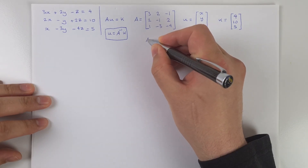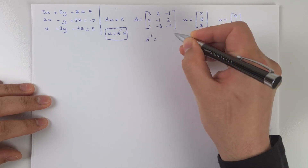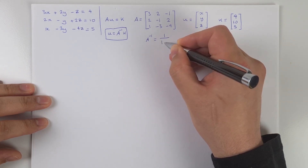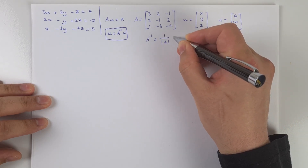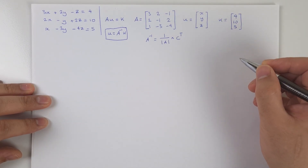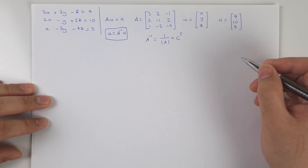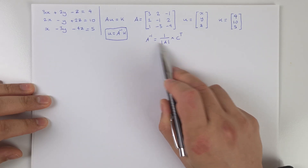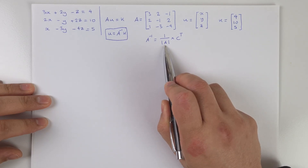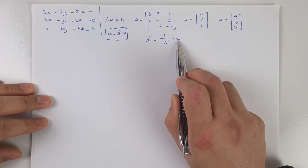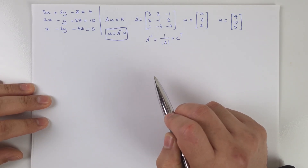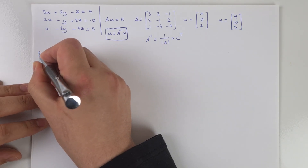There's a formula we're going to follow: A inverse equals the reciprocal of the determinant — that is, one divided by the determinant — multiplied by the transpose of the matrix of cofactors, which is also sometimes called the adjoint matrix of A. To successfully find A inverse, we need to work out three pieces: the determinant of A, the matrix of cofactors, and the transpose of that matrix. Let's do things one step at a time, starting with the determinant.